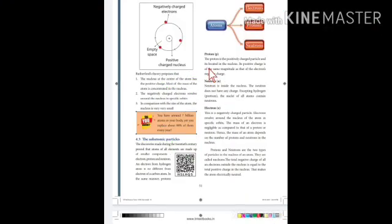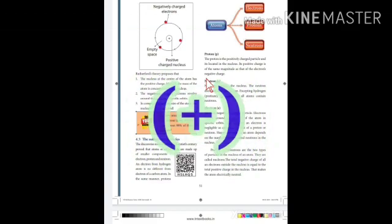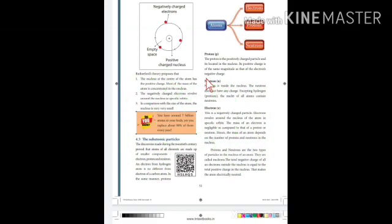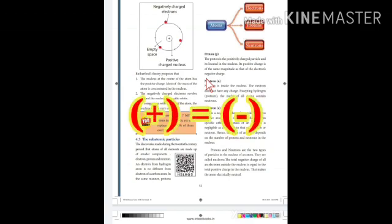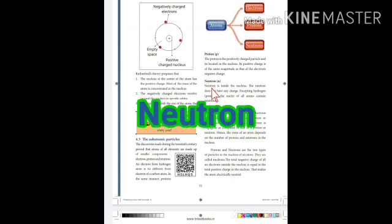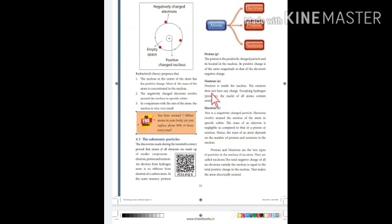First, we are going to see about the proton. The proton is a positively charged particle located in the nucleus. Its positive charge is of the same magnitude as the electron's negative charge. Therefore, in one atom, the number of protons and electrons is equal — that is, positive charge equals negative charge. The neutron is also inside the nucleus and does not have any charge. Excepting hydrogen, the nuclei of all atoms contain neutrons.